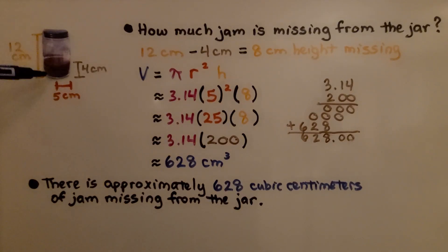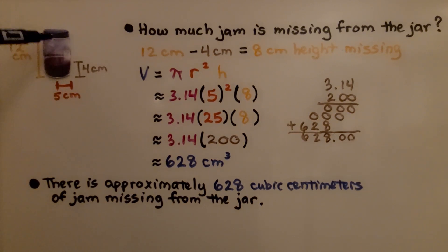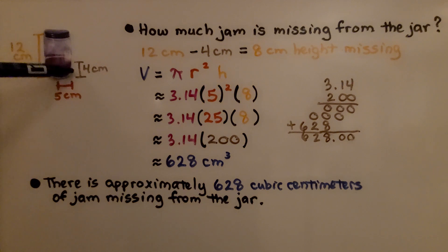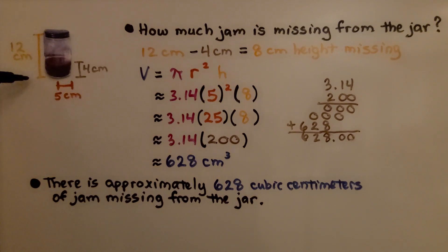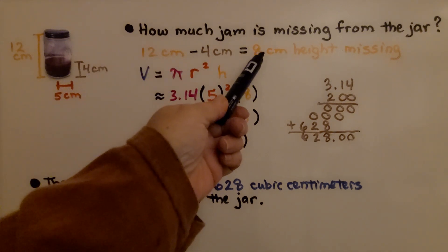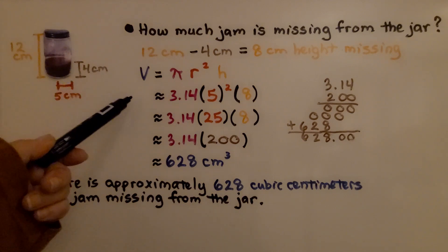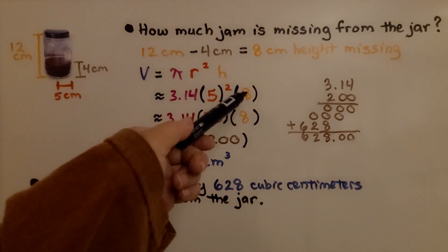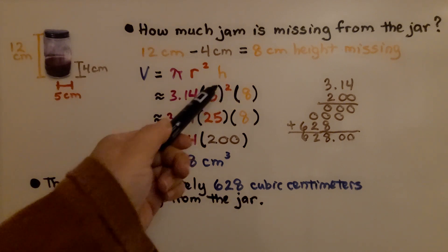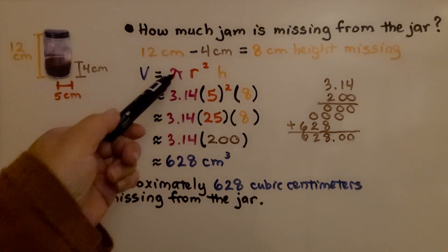For this problem, we have a jar with some jam in it, but there's some missing jam. There's only 4 centimeters of jam remaining, though the jar is 12 centimeters tall, and the radius is 5 centimeters. So how much jam is missing? The jar is 12 centimeters, 4 centimeters remain, so 8 centimeters of height worth of jam is missing. We use the volume formula for a cylinder with height 8, radius 5, and approximately 3.14 for pi.